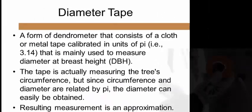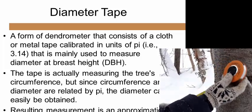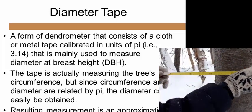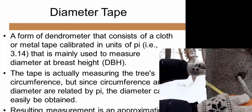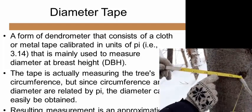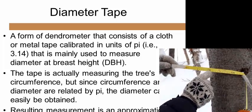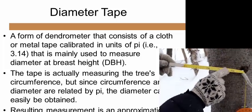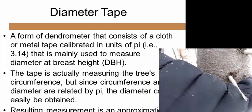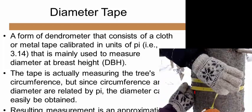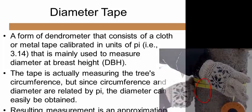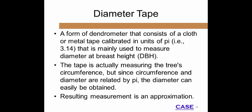A diameter tape is a type of dendrometer made of cloth or metal. It is used to measure the diameter at breast height, called DBH. DBH is measured at a fixed height of 4.5 feet or 1.4 meters above the ground. Diameter is easily measured because the tape is calibrated in units of pi, or 3.14 inches or centimeters. The tape actually measures the tree's circumference, but since circumference and diameter are related to pi, the diameter can be easily converted. The only problem is that the diameter tape assumes the tree trunk's cross-section is perfectly circular, so it gives only an approximation.